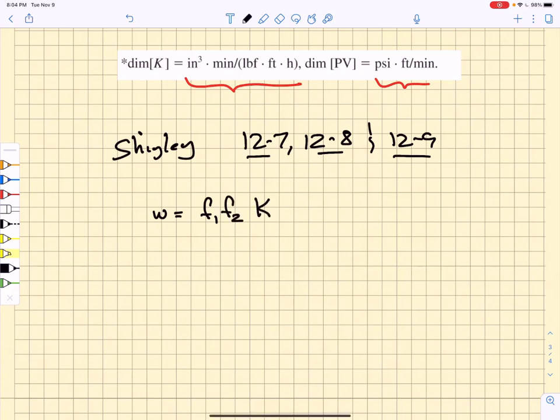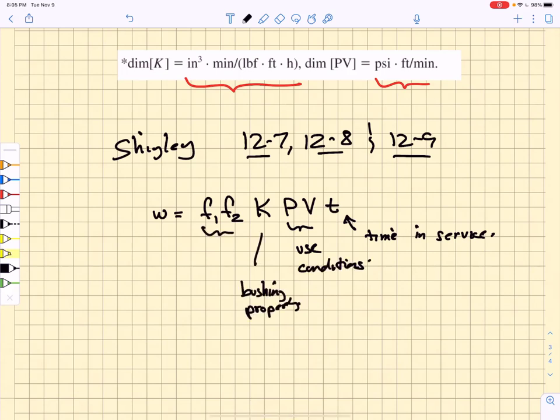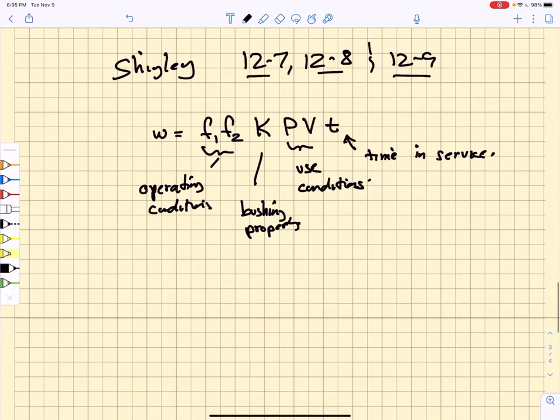So the wear is going to be related to something called f1 times f2 times k times P times v times t. T is the time in service, pressure and velocity are the use conditions, k is a bushing property, and f1 and f2 correspond to operating conditions. We will find examples of f1 and f2. F1 we can find in table 12-10, and f2 we get out of table 12-11.